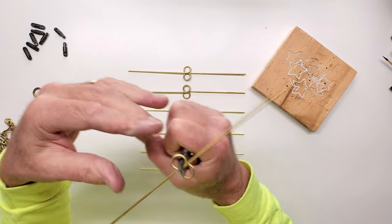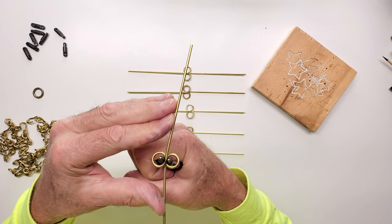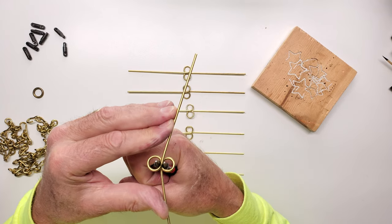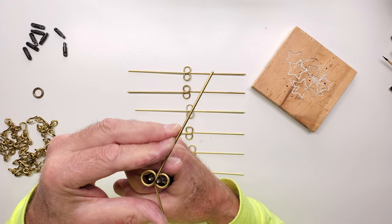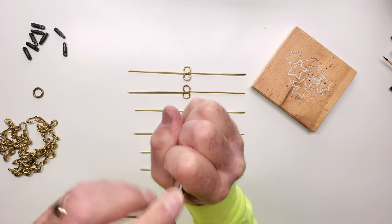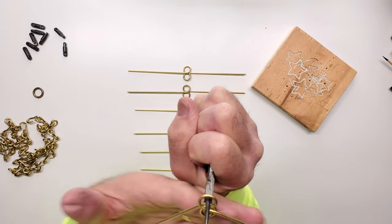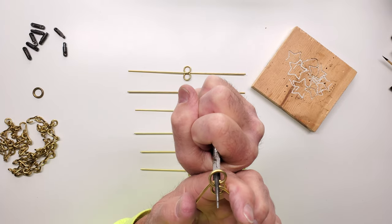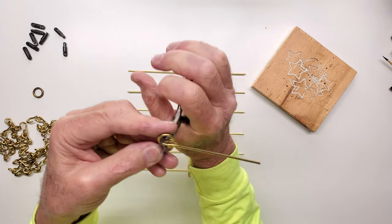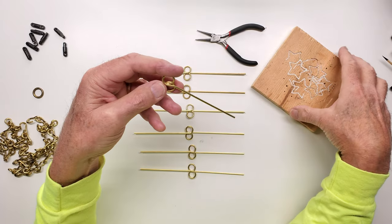I'll then bend the arms down, trying to keep the bending equal on both sides until we've achieved a 90-degree angle.